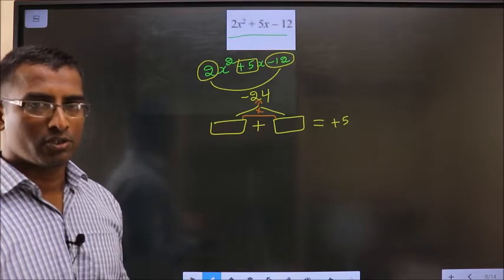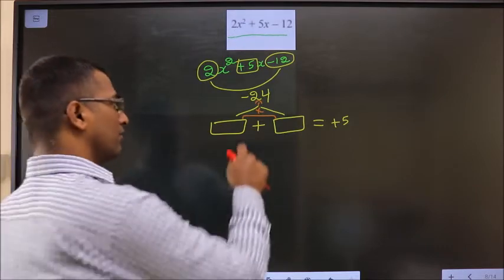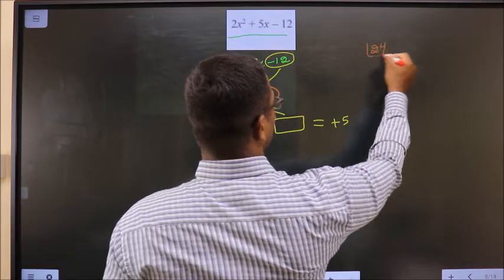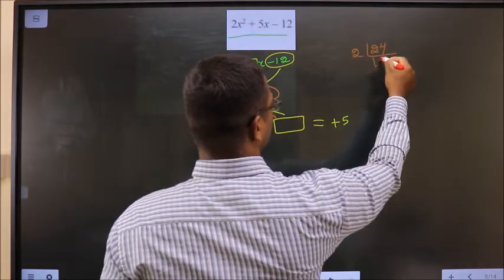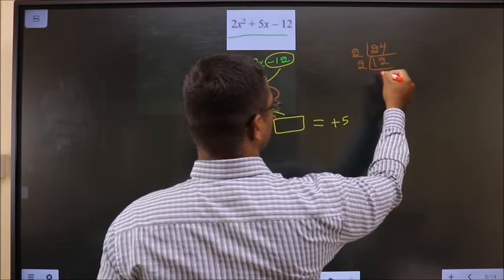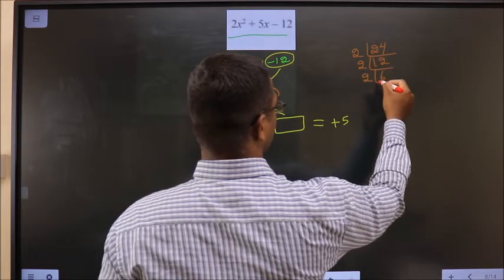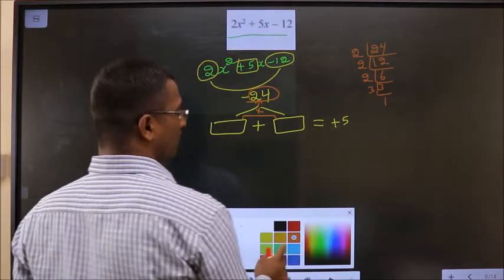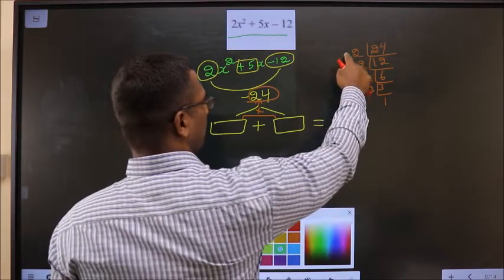To get those two numbers, take LCM of 24. So, this will be 2 times 12. Next 2, 6. Next 2, 3. And next 3, 1. So, the numbers will be 2 into 2, 4. 4 into 2, 8.